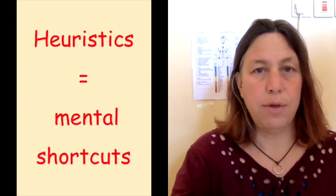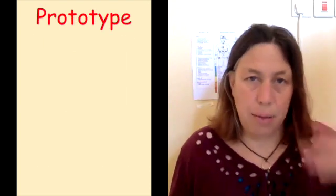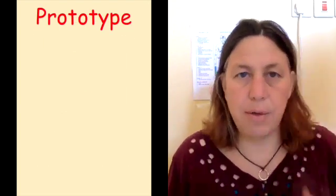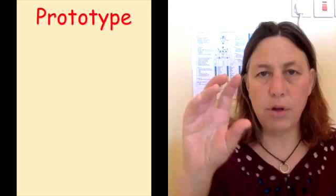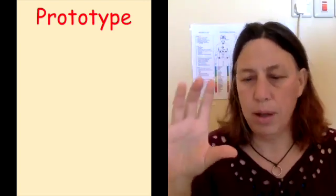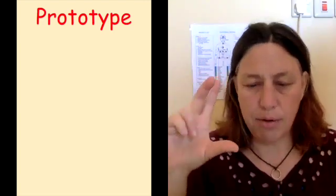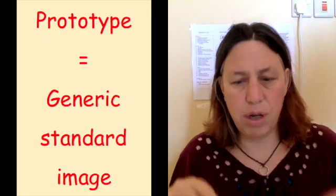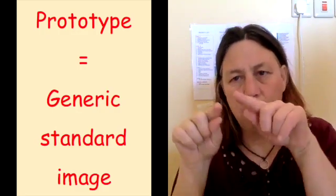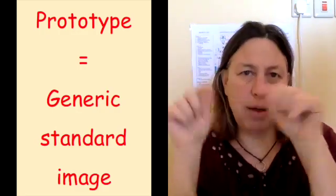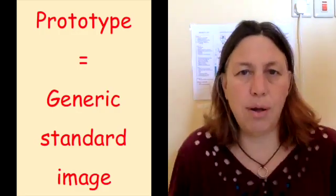We also use prototypes. When we think about something, we often use a standard image of it. For example, my standard image of a tree is a brown trunk and green things on top — like a child's drawing.